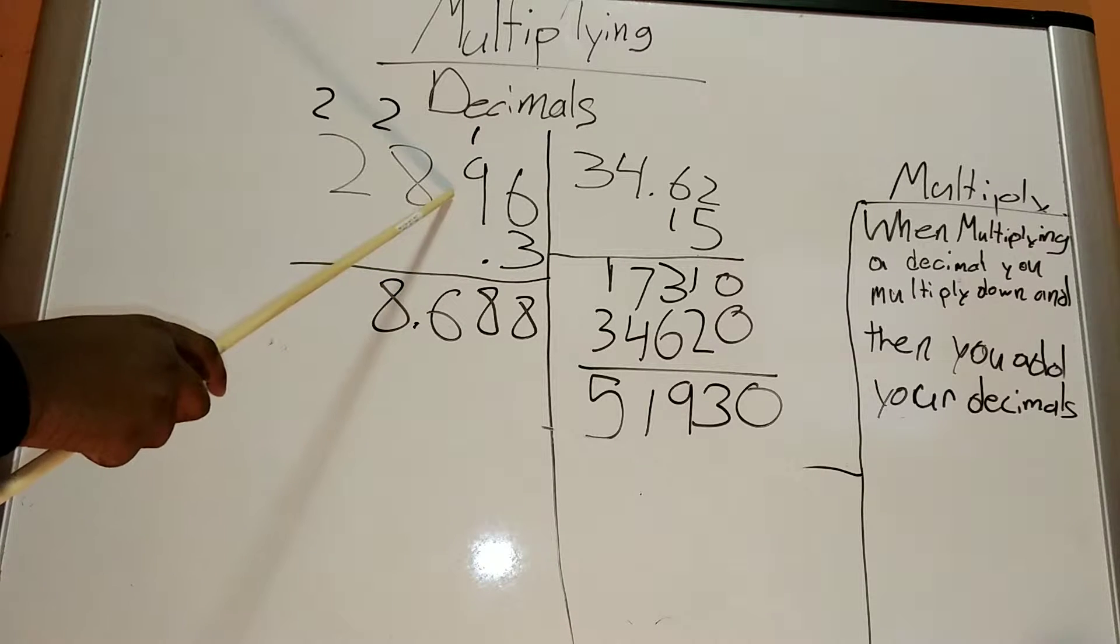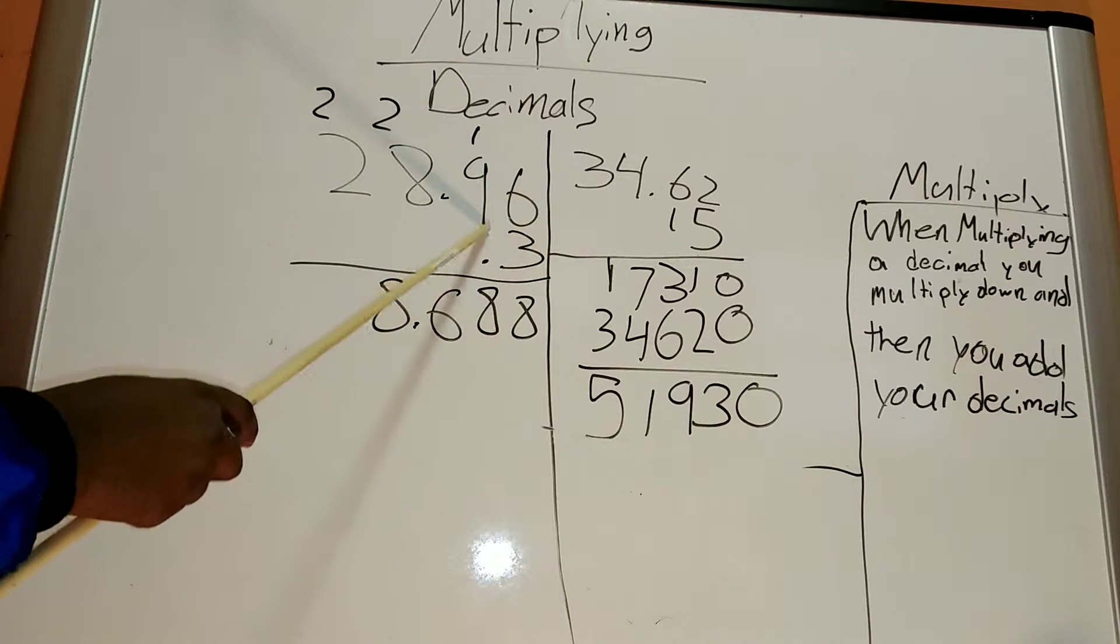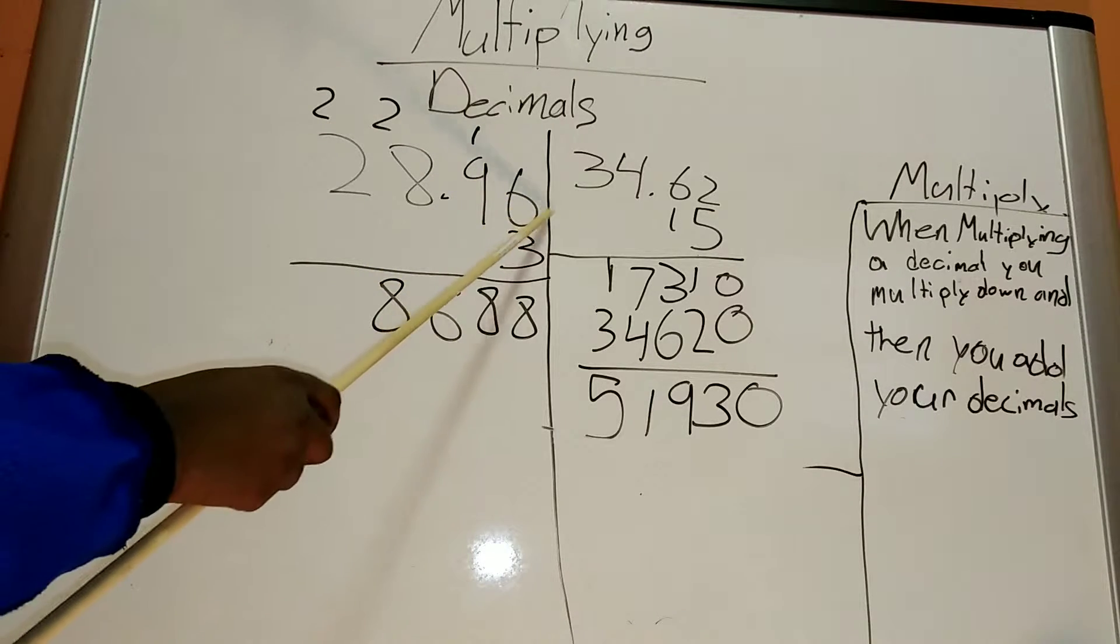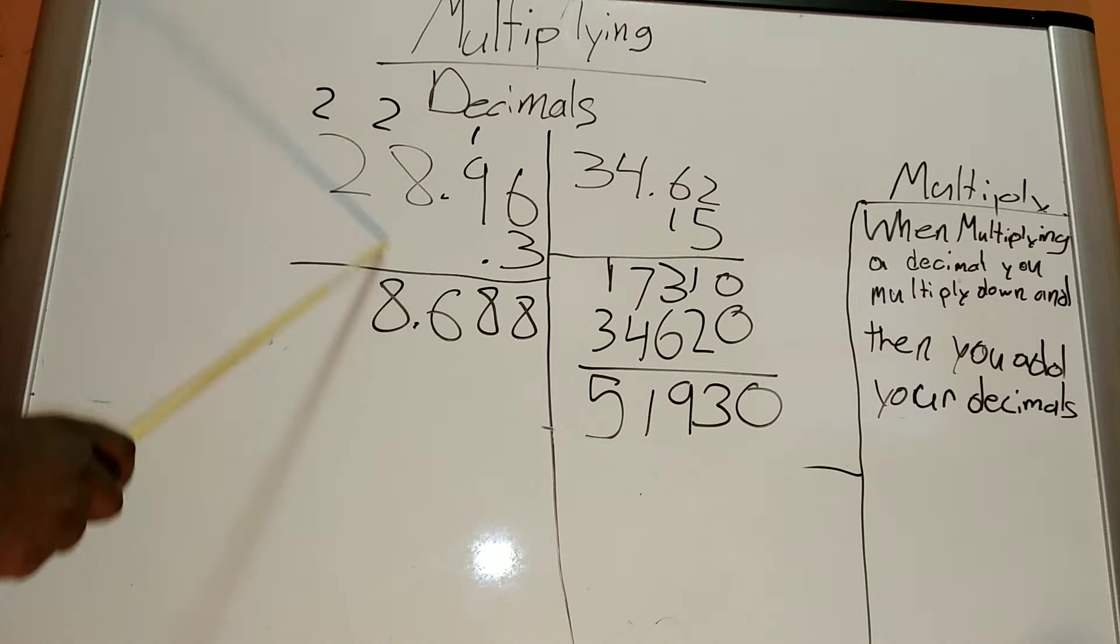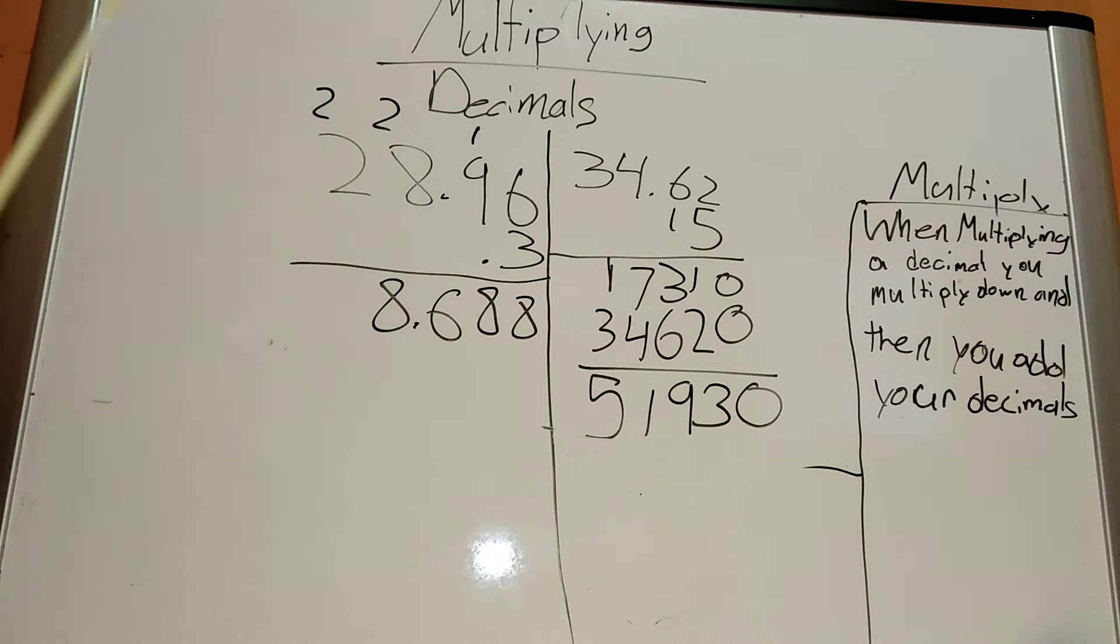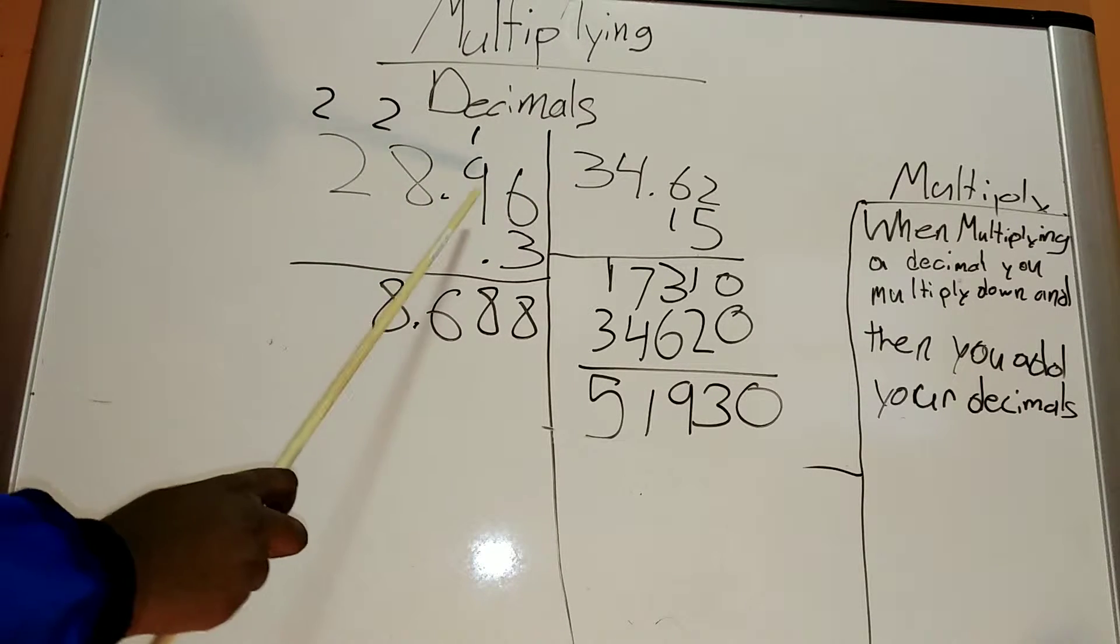So, this is 1, 2, 3 places. 1, 2 places away from the whole number. And then this is only one place. When I mean whole number, I mean in front of it, wherever the decimal starts, it's how you just count.